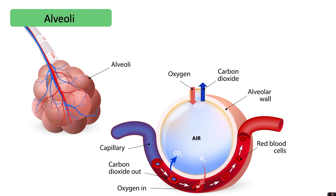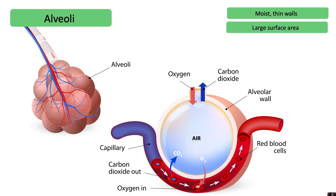The alveoli are very good at gaseous exchange. They are adapted by having moist, thin walls which helps with the diffusion of the gases. They have a large surface area, which means we can diffuse a lot of gas at once. They also have a close network of capillaries so the blood can very quickly take gases to and from the alveoli, which helps maintain a concentration gradient for diffusion.